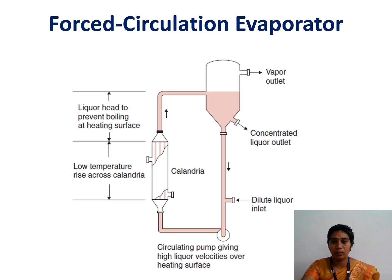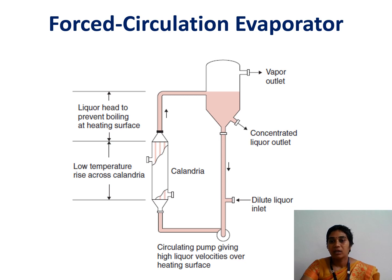Next is the forced circulation evaporator. In the previous cases, the flow of material takes place naturally. In the forced circulation evaporator, the feed material is forced inside the evaporator with the help of pumps. A pump is used to circulate the juices or food materials inside the tubes. After concentration, the product is transferred to the calandria section. If further concentration is needed, the material is recirculated through the evaporator until the desired concentration is reached.